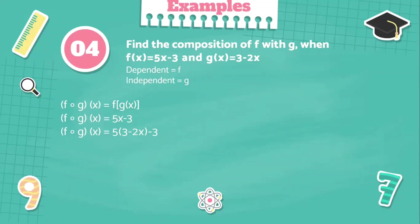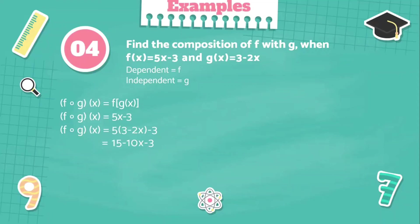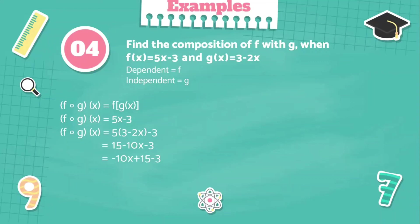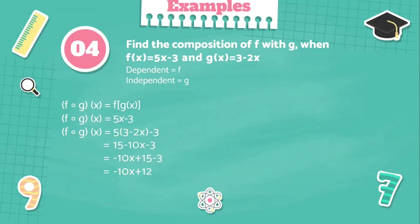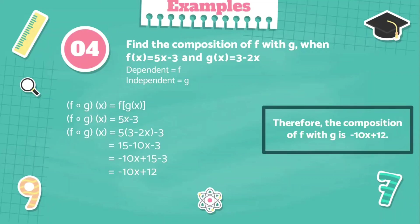5 times the quantity 3 minus 2x is equal to 15 minus 10x, minus 3. Now we're going to group the similar terms: negative 10x plus 15 minus 3. And 15 minus 3 is equal to 12. So our answer will be negative 10x plus 12. Therefore, the composition of f with g is negative 10x plus 12.